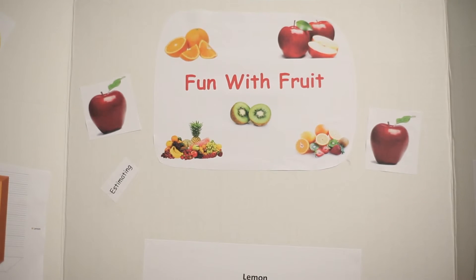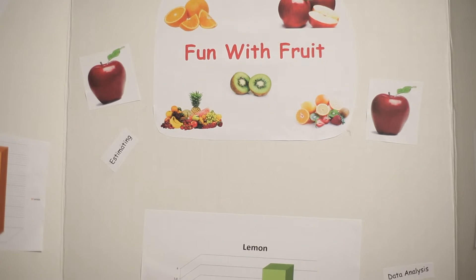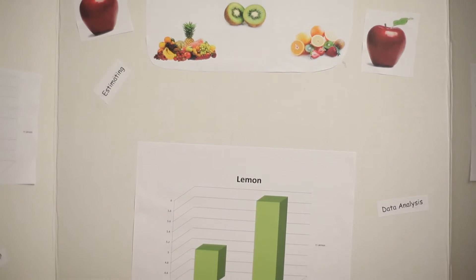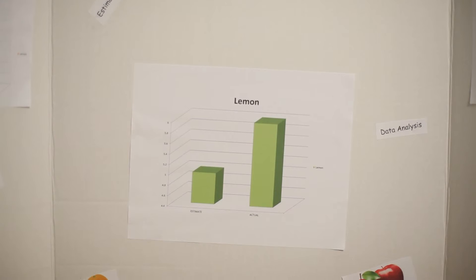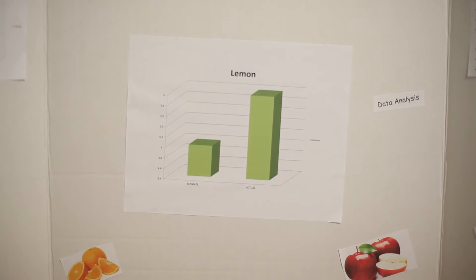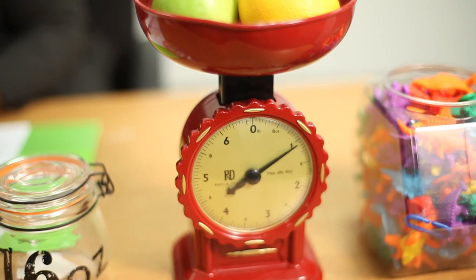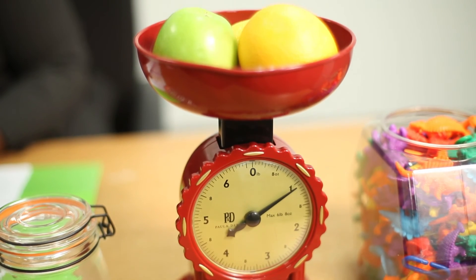Once you have all of your results, you plot them and then you display them. You can extend this activity even further by asking which fruit was the easiest to estimate and which fruit was the most difficult. And once your child is done, they won't even realize that they've completed a data analysis activity.